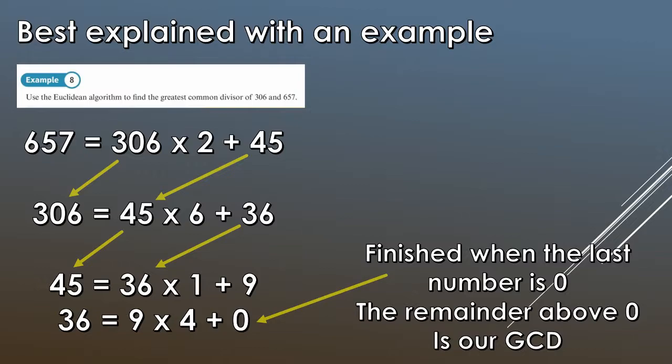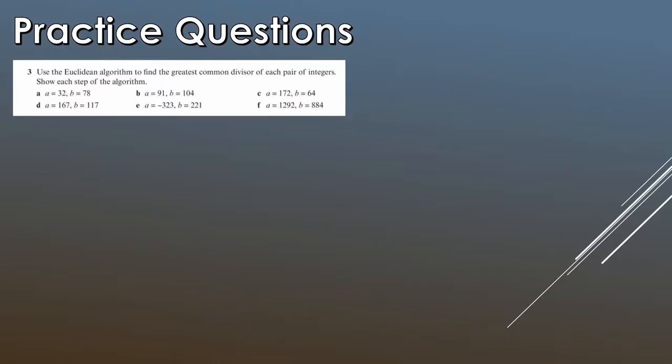So this is our GCD. So therefore the GCD of 306 and 657 is 9. So let's have a couple of practice questions.